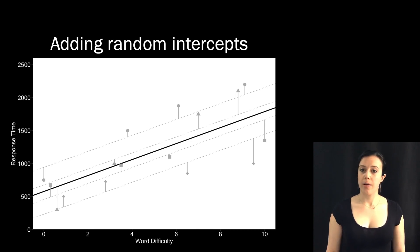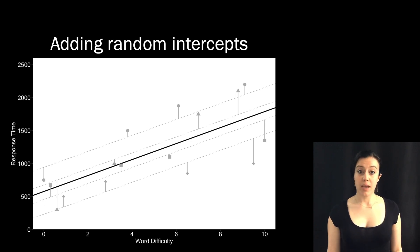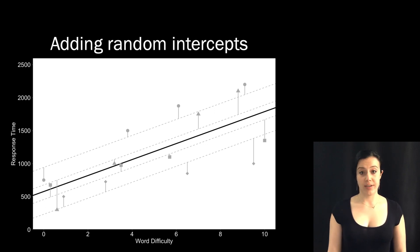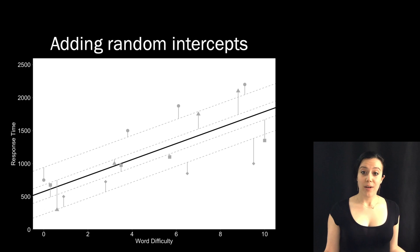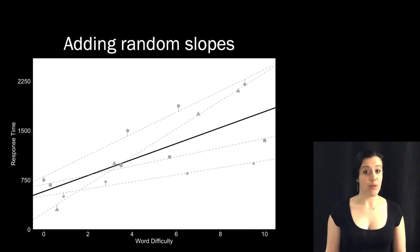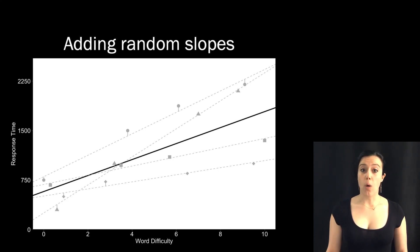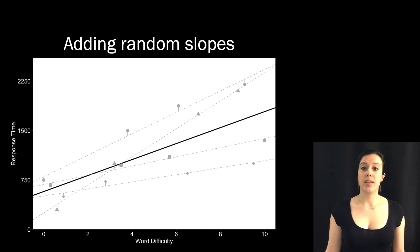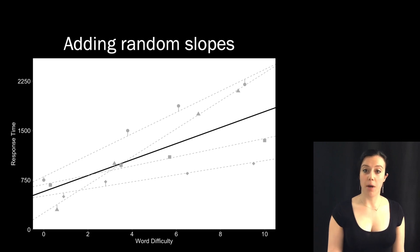So each line is shifted up or down, but the lines are still parallel, meaning we're assuming that each person is affected by word difficulty to the same extent — that a one-unit change in word difficulty is associated with the same magnitude of change in response time for every single participant. But that's not really a reasonable assumption — people are different. We can account for that in our model by including random slopes, or participant-varying slopes. Now we're not only accounting for the fact that some participants respond more quickly than others, but also that some people are less affected by word difficulty than others. The residual error is even smaller because the regression lines are really tailored to the individual.